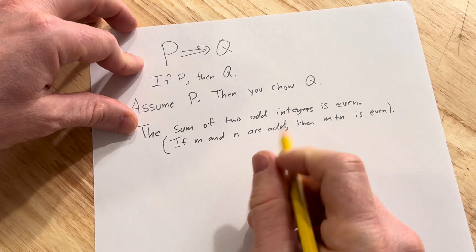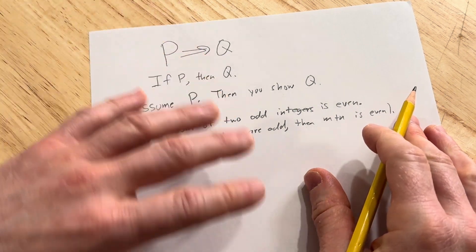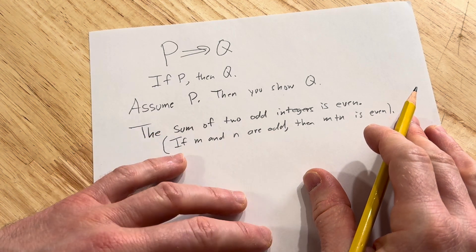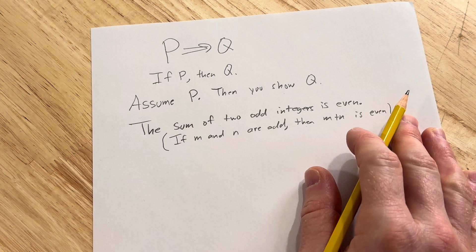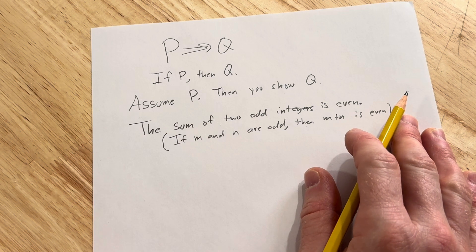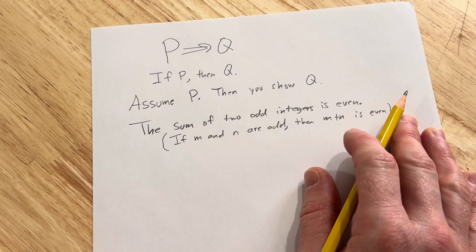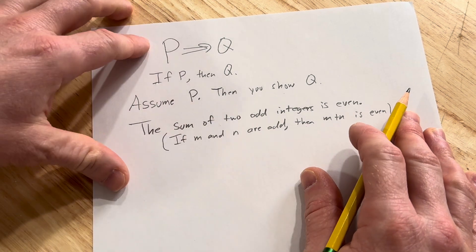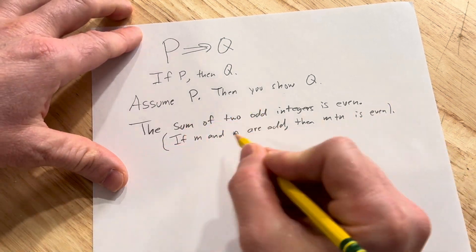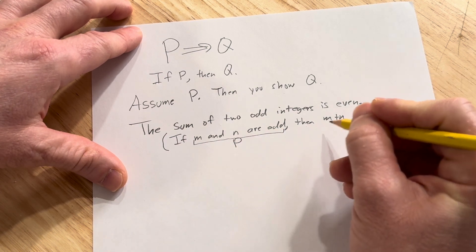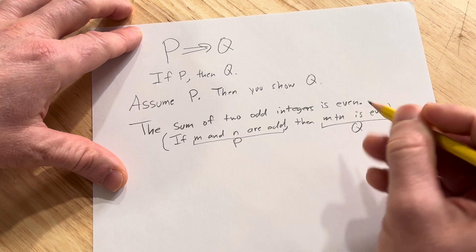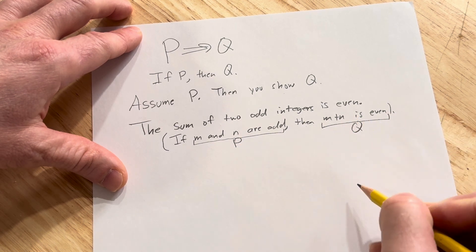M and N are integers. How much detail you show in these proofs varies — everyone writes their proofs differently. My advice is to show as many steps as you can and be as detailed as you can. So here, 'M and N are odd' is the P part, and 'M plus N is even' is the Q part. If P, then Q.